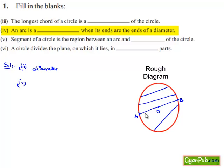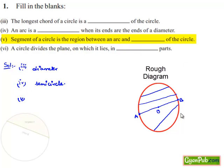the arc formed by the chord passing through the center is nothing but a semicircle. Now moving on to the 5th blank. A segment of the circle is the region between an arc and a chord of the circle, by definition.